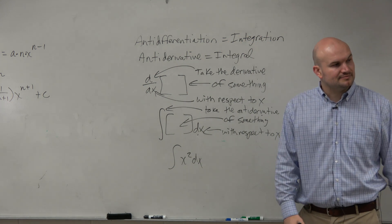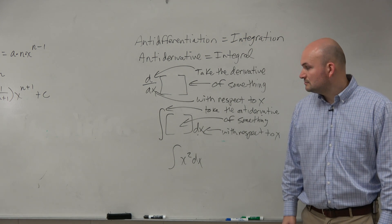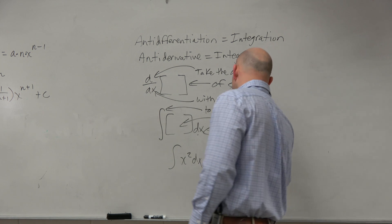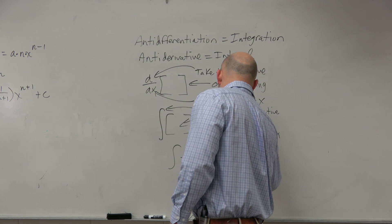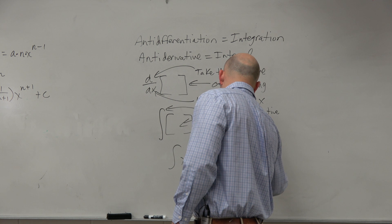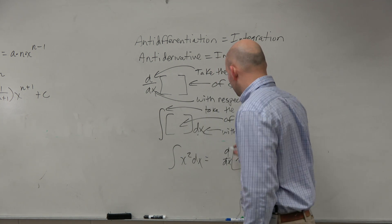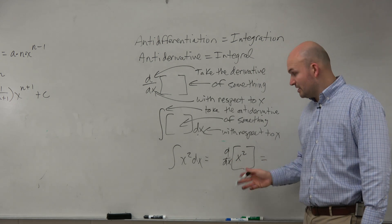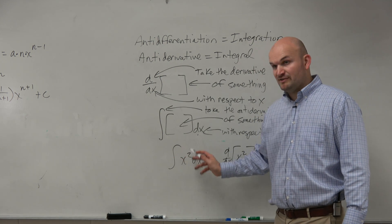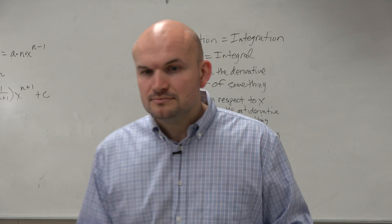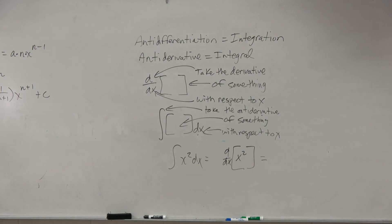So your problem is going to look like this. Now, the important thing I want you guys to understand is, obviously, these mean two different things. This means take the derivative with respect to x squared. This means take the antiderivative of x squared with respect to dx. So the issue comes in - not many students have a problem.